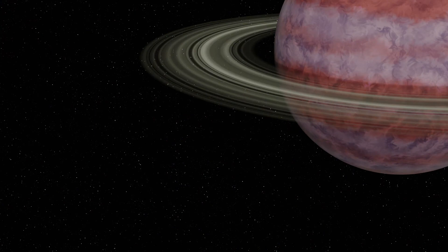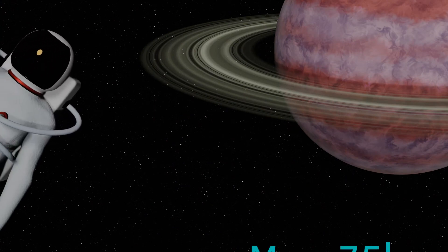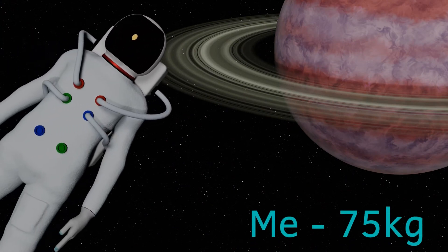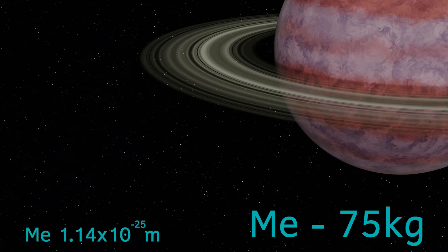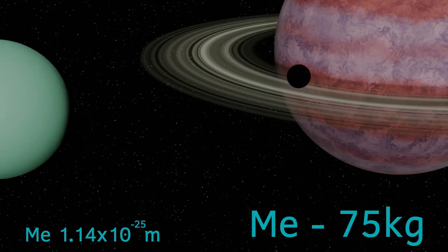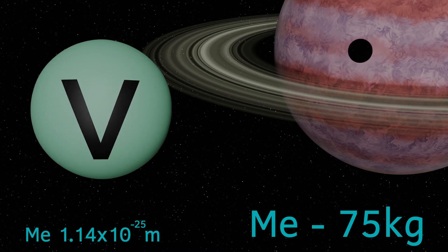Let's try some other objects. Well what about me? I weigh 75 kilograms so my Schwarzschild radius is 1.14 times 10 to the minus 25 metres. Just to put that into a little perspective, that's about 10 times smaller than the smallest known fundamental particle, the neutrino.